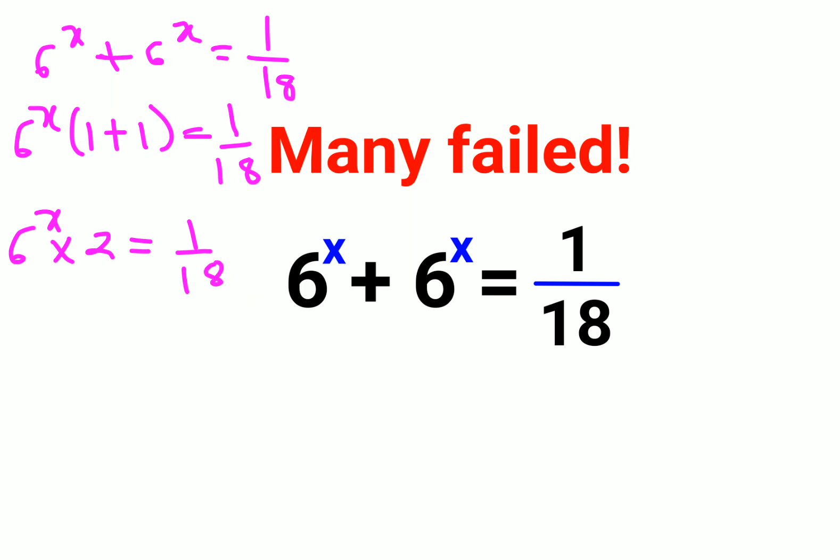So now in order to find the value of x, we will try to put the entire numbers on the other side. So we will divide both sides by 2. So what happens over here is this gets cancelled. I am just left with 6 raised to x equals to 1 upon 18 into 2 gets you 36.